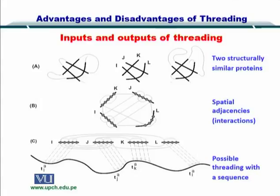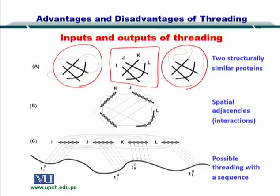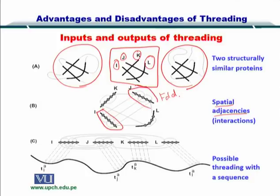Looking at the inputs and outputs of threading, you will see that we have two structurally similar proteins, and in both of them we have a fold that is common. This contains secondary structures I, J, K, and L. We also measure their spatial adjacencies — that is, how close is I to J and L to K, and so on. The spatial adjacencies describe the interactions between these secondary structures.